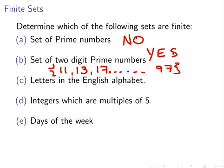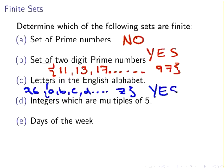Now, letters in the English alphabet. This one is very straightforward. There are 26 letters in the English alphabet: A, B, C, D, and so on, all the way up to Z. So the answer to that one, yes, that's a finite set.